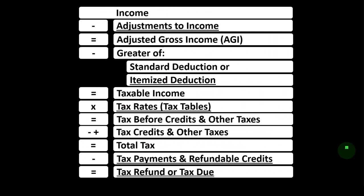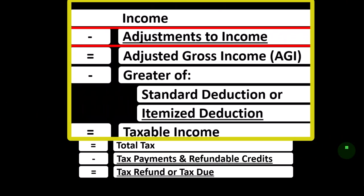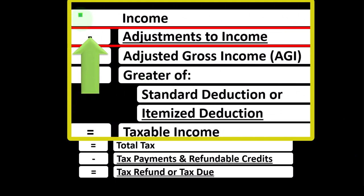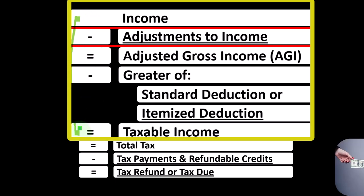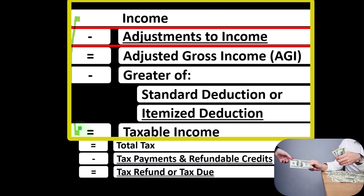Looking at the income tax formula, we're focused on line 2, adjustment to income, which you might hear called above-the-line deductions or Schedule 1 deductions. Remembering the first half of the income tax formula is basically a funny income statement — most income statements having income minus expenses resulting in net income, whereas here we have income minus deductions resulting in taxable income.